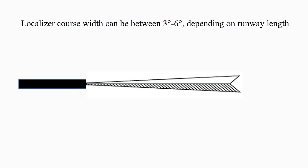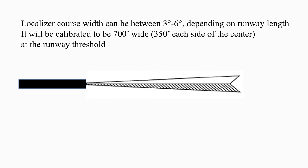The width of a localizer course can be between 3 and 6 degrees side to side depending on the length of the runway it serves. Like a VOR radial, the course gets narrower as you approach the transmitter, and it will be calibrated so that the course is 700 feet wide side to side — or 350 feet each side of center — at the runway threshold.